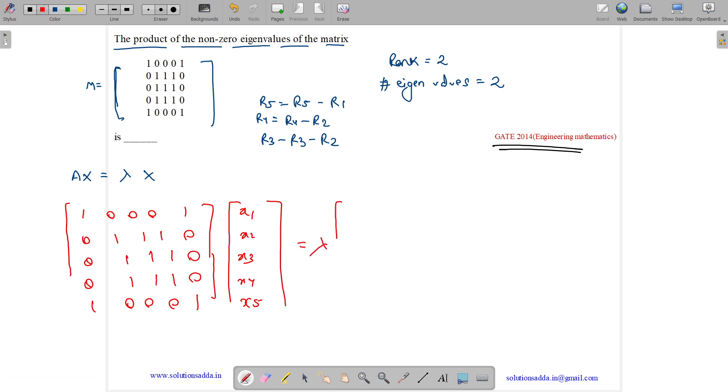Lambda is our eigenvalues. Then we have X1, X2, X3, X4 and X5. Now let us see. If you multiply first row by first column, you will get X1 plus X5 equals to lambda X1. If you multiply fifth row by this column, you will get X1 plus X5 equals to lambda X5. Summing both of them, you will get 2X1 plus X5 equals to lambda X1 plus X5. Cancelling this, you will get lambda 1 equals to 2.